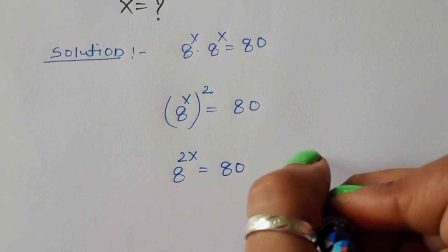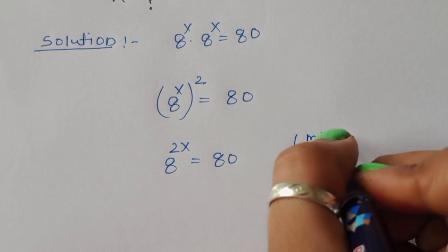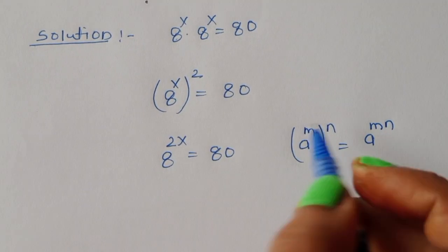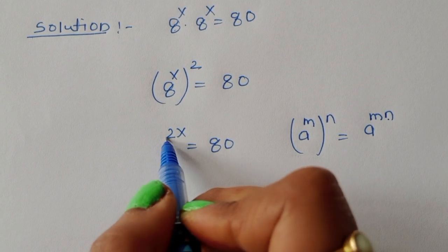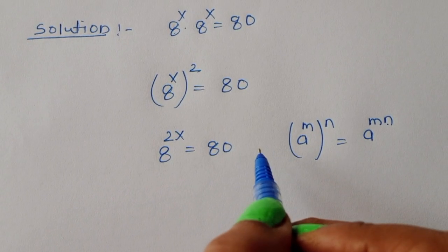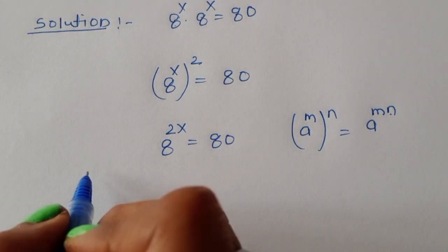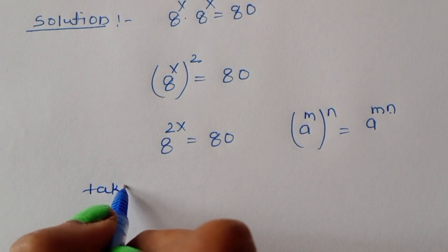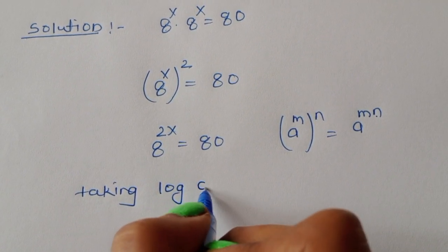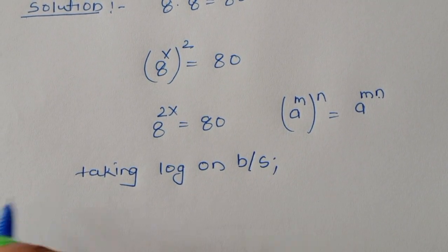We use the formula: if a^m raised to the power n is given, we can write it as a^(mn). According to this, 8^(2x) is equal to 80. Now we have to find the value of x, so we take log on both sides.